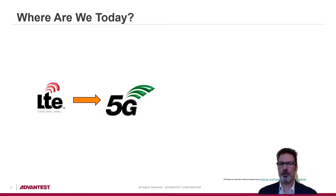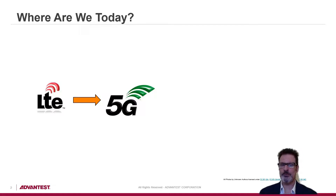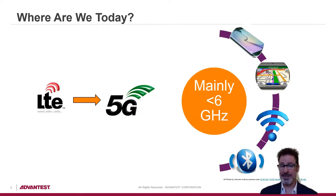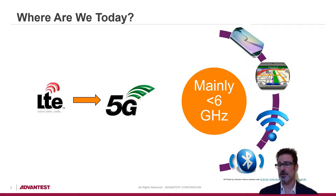Let's start by looking at where we are today. As we move from LTE to 5G, we hear a lot of buzz about millimeter wave, but much of the current focus is still in the familiar sub-6 GHz region. Driven by applications such as mainstream LTE, GPS, Wi-Fi, and Bluetooth, the initial 5G deployments are also mainly sub-6 GHz.